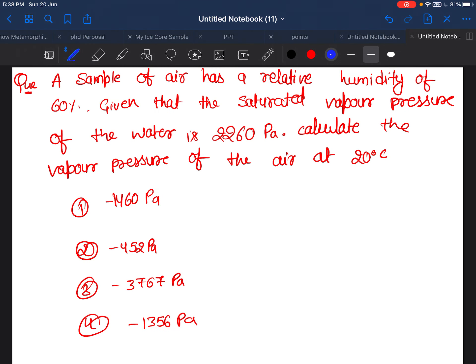Here the question is: a sample of air has a relative humidity of 60%. First of all, let's see what relative humidity means. Relative humidity is basically the ratio of how much an air parcel is having humidity by how much it can hold.